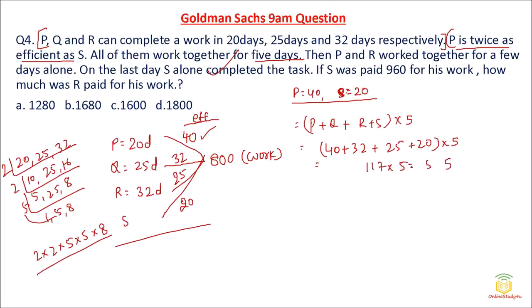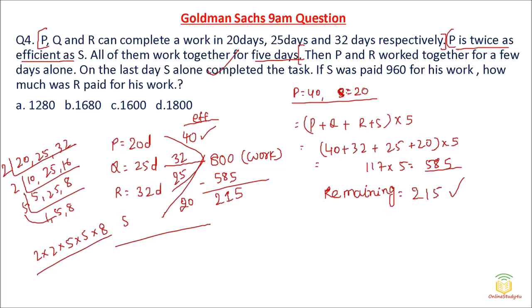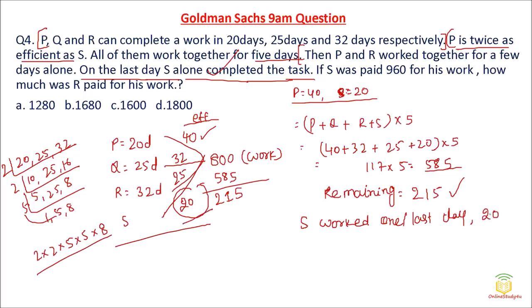In 5 days, the total work done by all together is 117 × 5 = 585 units. Remaining work = 800 − 585 = 215 units. Then we read: P and R worked for a few days alone, and on the last day S alone completed the work. So on the last day (1 day), S completes 20 units of work. Therefore, 215 − 20 = 195 units of work remain for P and R.